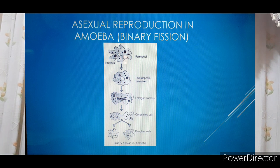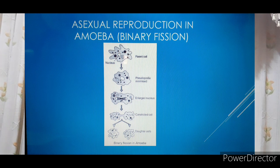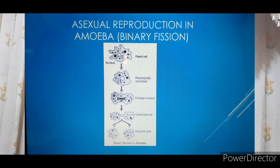Next, explain the process of asexual reproduction in amoeba. Asexual reproduction in amoeba takes place by binary fission — it is the division of the parent cell into two equal halves and each half grows into a new organism. In amoeba, there is no particular shape and the nucleus is present inside. The nucleus of the cell elongates and divides into two, followed by division of the cytoplasm, resulting in two equal-sized daughter cells.